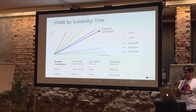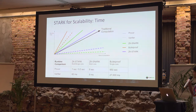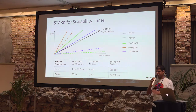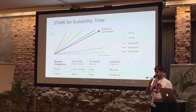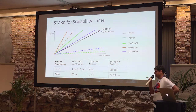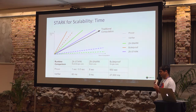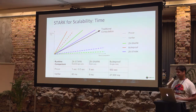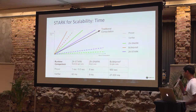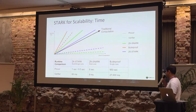When it comes to the verifier time — by the way, those times for STARK come from the academic code available on GitHub which is not very well optimized — you can still see that the verifier time for STARK and SNARK is about the same, while for Bulletproof it's something like 1000 times slower.